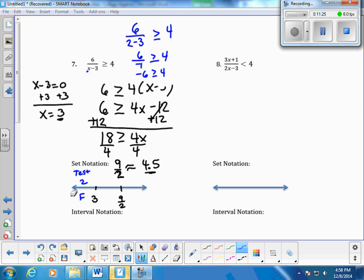I'm going to test the number between 3 and 4.5. Let's test 4. I'm going to go back into the original, 6, and then I'm testing 4 this time. So, where x is at, I'm going to put a 4. That's 6 over 1, which is just 6, and it's saying 6 is greater than or equal to 4. That's true.